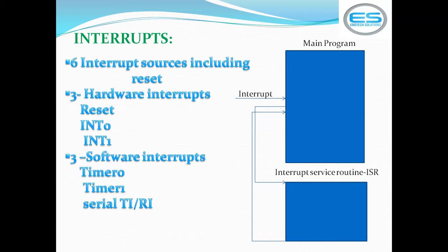From the 8051, there are 6 interrupt resources including reset. There are 3 hardware interrupts: Reset, INT0, and INT1. Software interrupts include Timer 0, Timer 1, and serial interrupt. Hardware interrupts expect external pulses from switches, buttons, or sensors. Software interrupts occur based on flags from timers or serial communication operations. The behavior of an interrupt is simple: it stops the main program, executes the ISR, then returns to the main program.